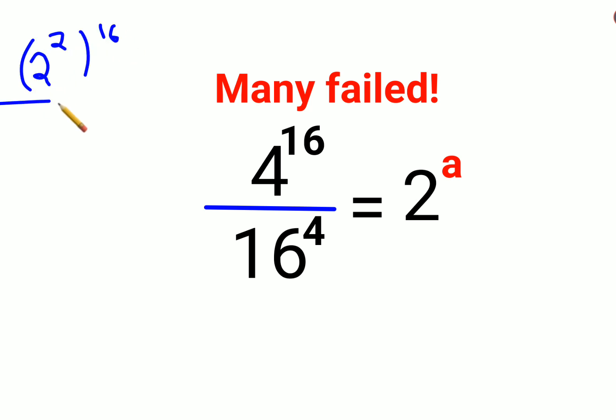Instead of 16, we write this as 2 raised to 4, the whole raised to 4. Now in indices, a raised to m, the whole raised to n, can be written as a raised to m times n.